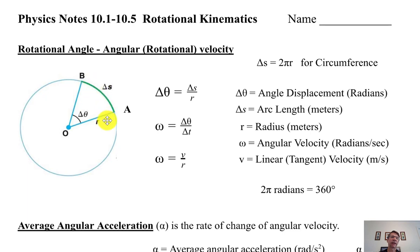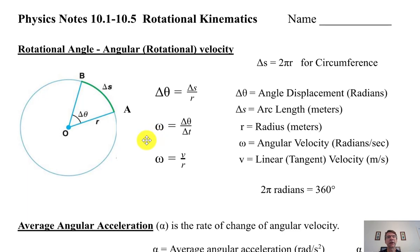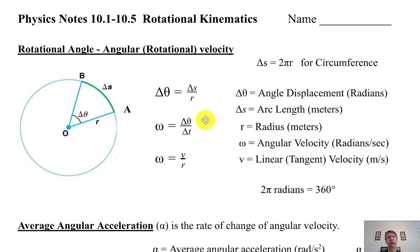Delta s is arc length — not really a straight line, but basically if you measured from point A to point B and made it straight, that's how long it is in meters. Omega, the w-looking symbol, is angular velocity — it can be clockwise or counterclockwise. Now we're going to have things that actually spin and accelerate while spinning. The definition of angular velocity is the change in angular position over time.